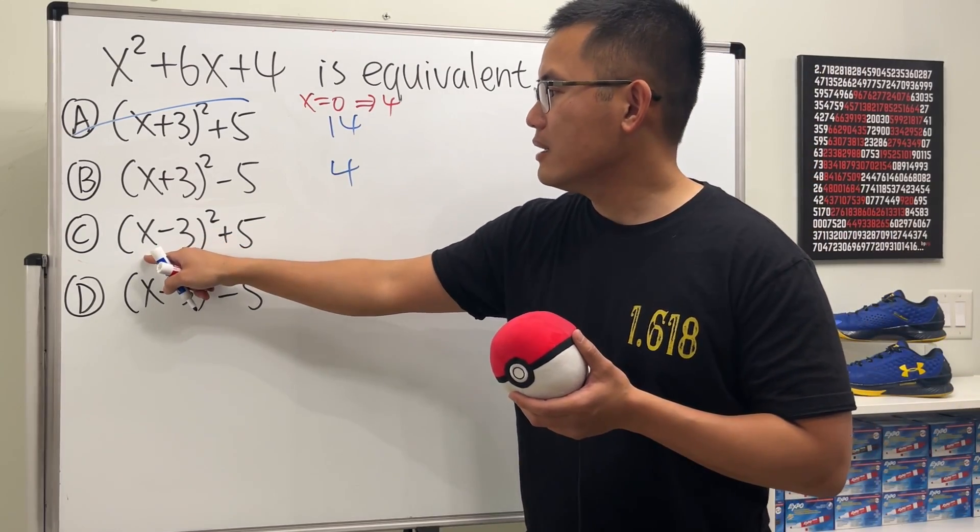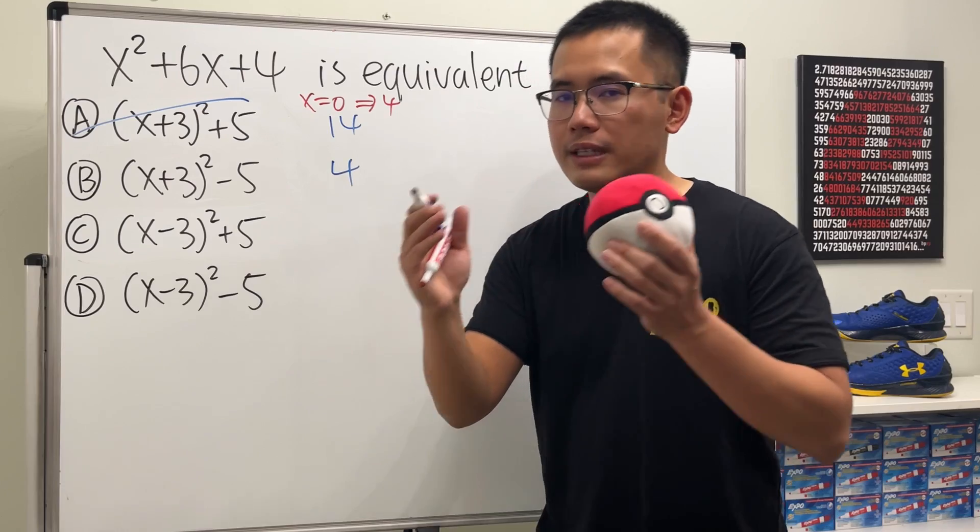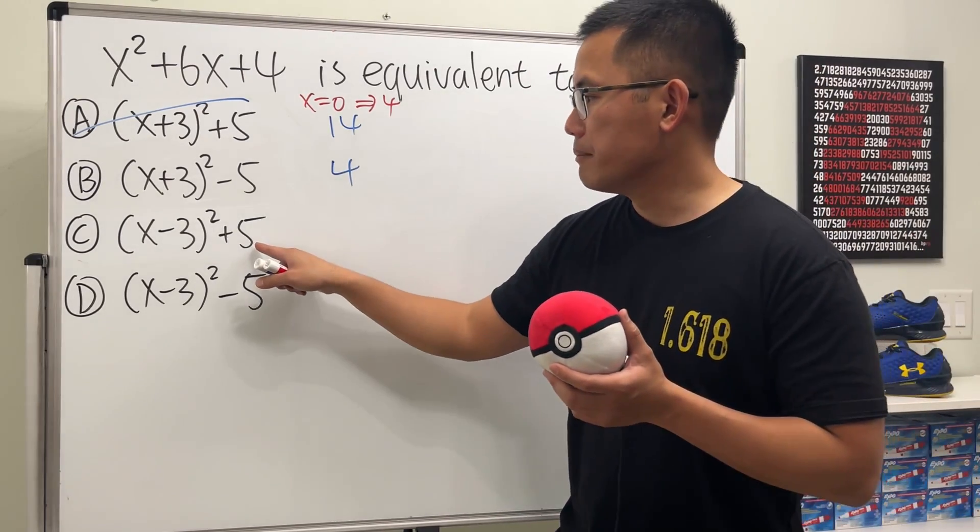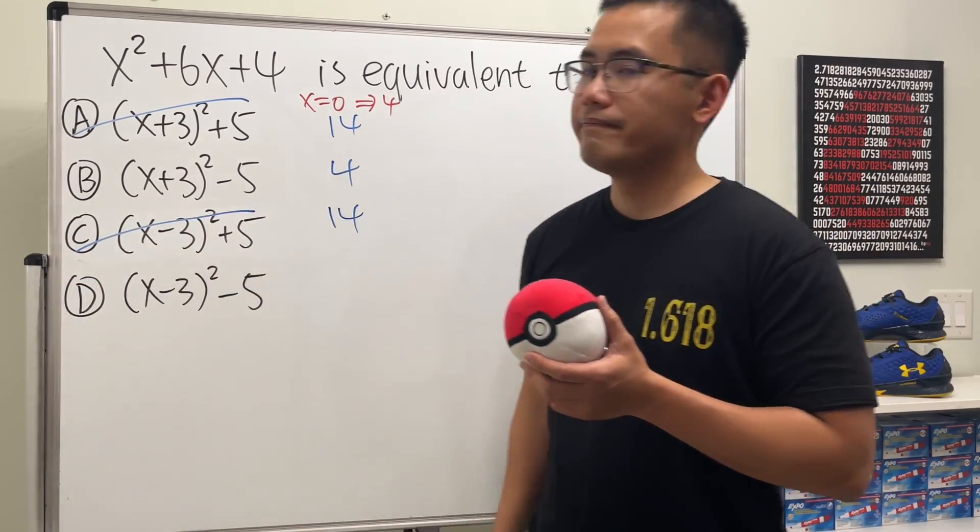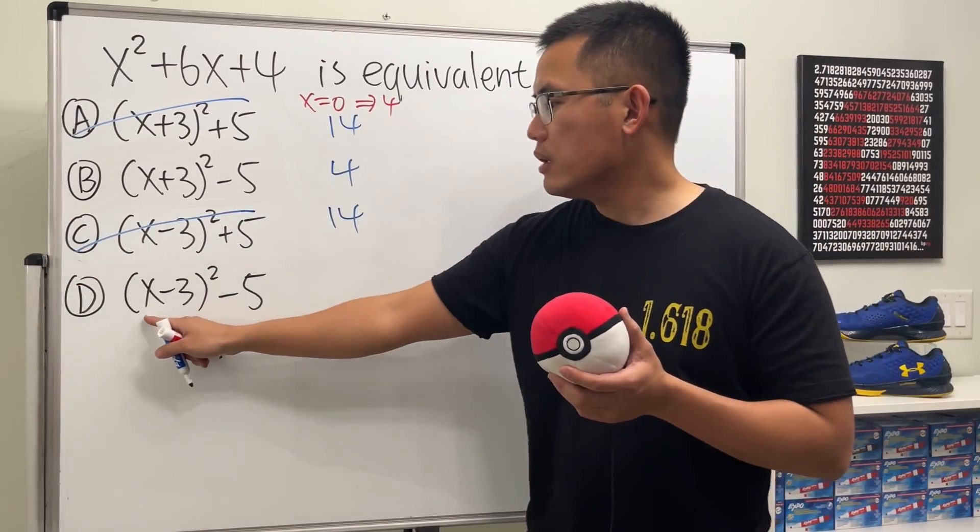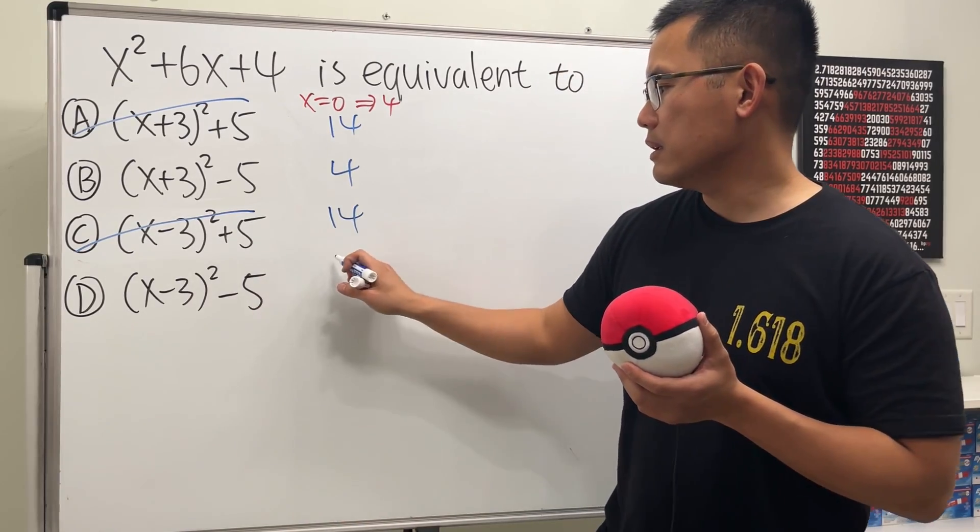Okay, plug in 0 into here. 0 minus 3 is negative 3. Negative 3 squared means negative 3 times negative 3 is positive 9. And then plus 5 is 14. No, this is not the answer. And then, plug in 0 into here, that's negative 3 squared, which is 9, minus 5. Ah, this is also 4.